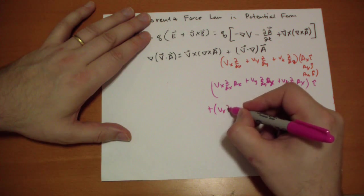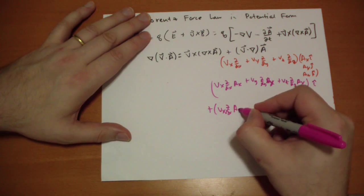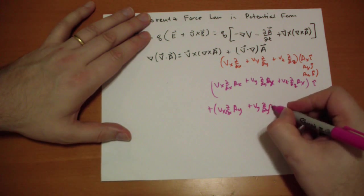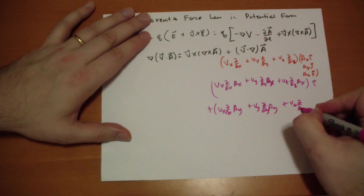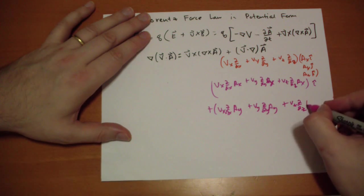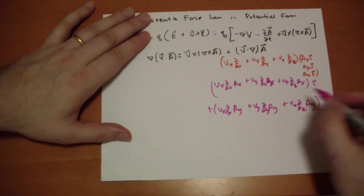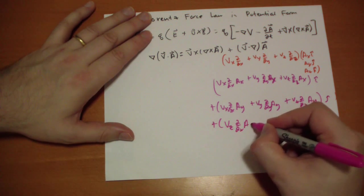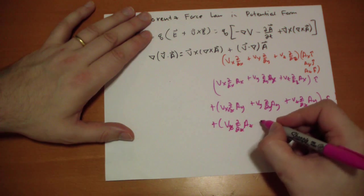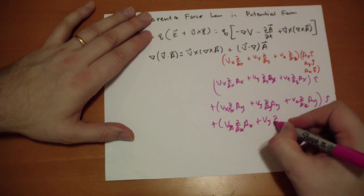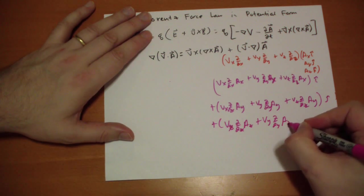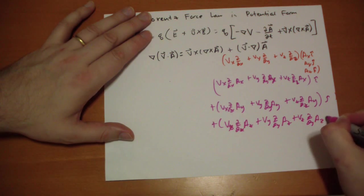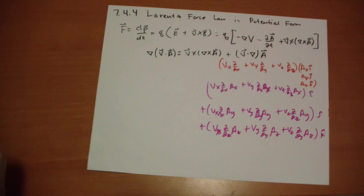Plus Vx d/dx Ay + Vy d/dy Ay + Vz d/dz Ay in the ĵ direction, and Vx d/dx Az + Vy d/dy Az + Vz d/dz Az in the k̂ direction. That's what it is — nine terms in total.